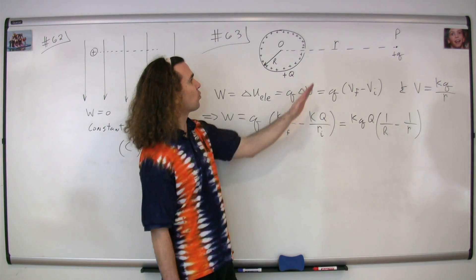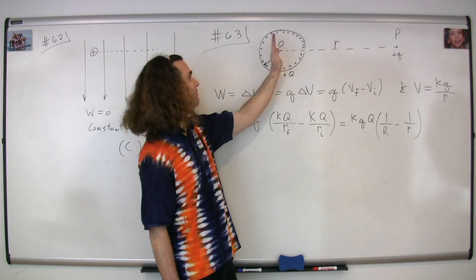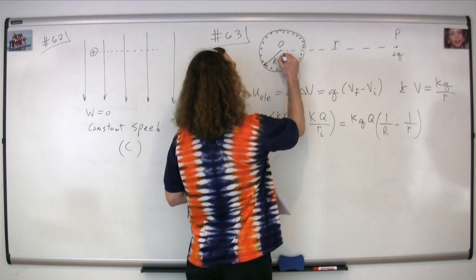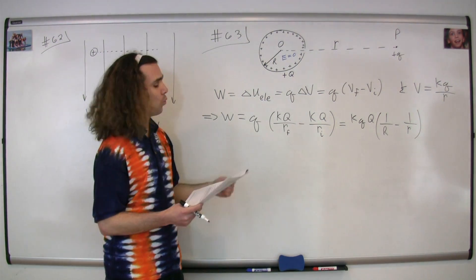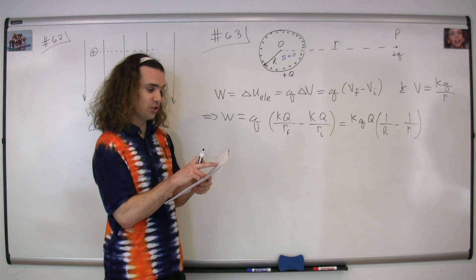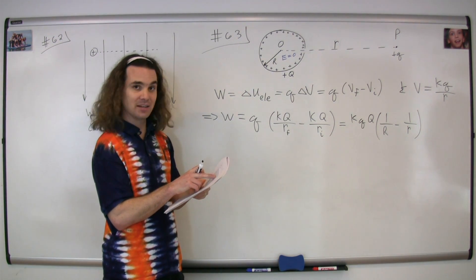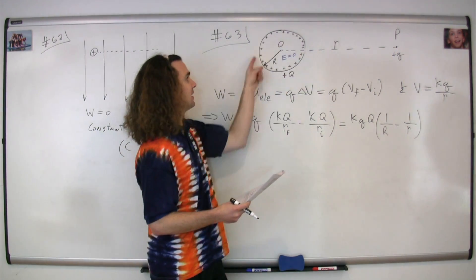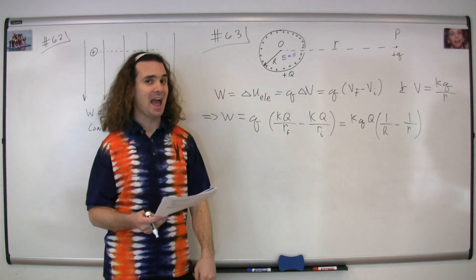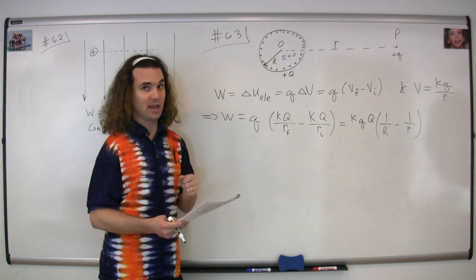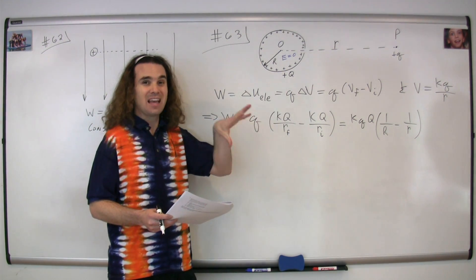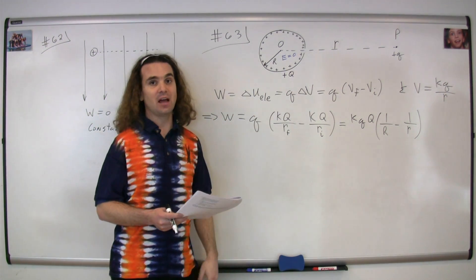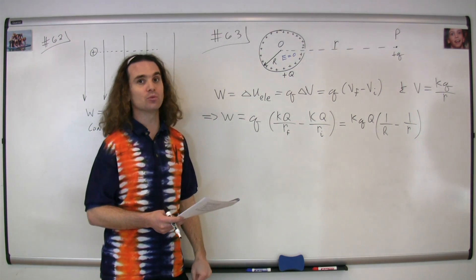We now need to figure out the work to move it from the surface to the center of the sphere. Notice that the charge is uniformly distributed on its surface, which means it acts like a conductor in electrostatic equilibrium. All the charge is evenly distributed on the surface, and therefore the electric field on the inside is zero.